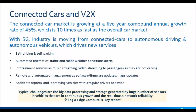There is very big growth in the connected car market right now, and the 5G industry is moving from connected cars to autonomous driving cars. By the 5G timeframe, it's expected to allow self-driving, automated telematics like traffic and road weather condition alerts, infotainment services like music streaming, remote and automated management for software and firmware, and accident reports in real time — all enabling autonomous driving by the 2020 timeframe.